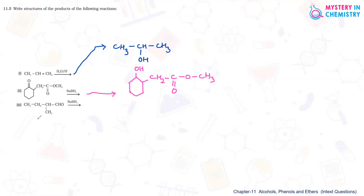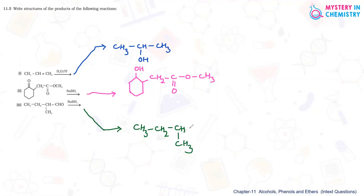For the third reaction, again a carbonyl group is present and NaBH4 is the reducing agent. Addition of hydrogen takes place at the double bond. The product formed is CH3-CH2-CH(OH)-CH(CH3) — this part is not disturbed, one hydrogen comes at this carbon atom (CH), and one goes to the oxygen, so an alcohol is formed. This should be the final product.